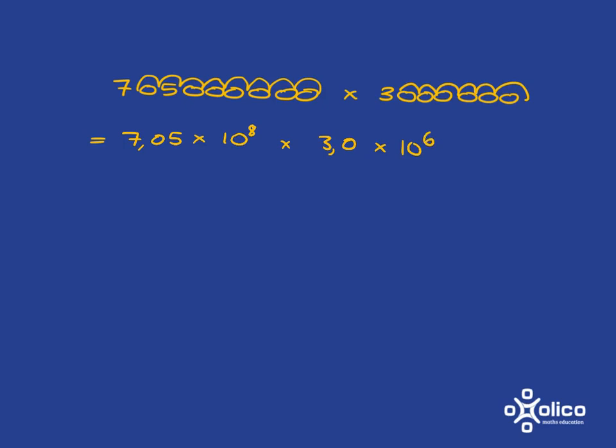Now what we're going to do is we're going to focus on each bit. We're going to multiply those together, and then we're going to multiply those together. So if we focus on multiplying 7.05 by 3, remember to multiply decimals you simply ignore the decimal comma. So we're cheating a bit, but we'll correct for our cheat.